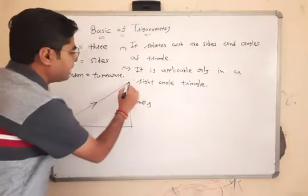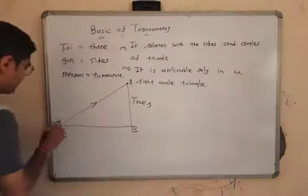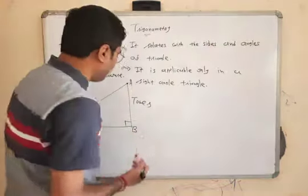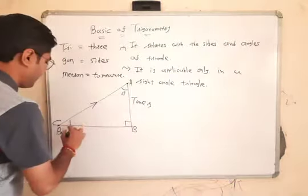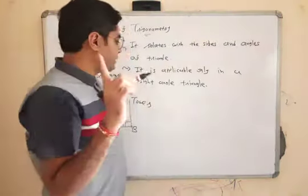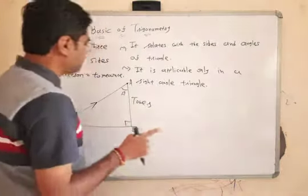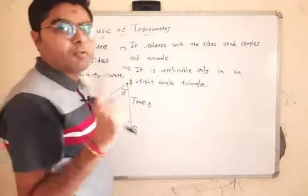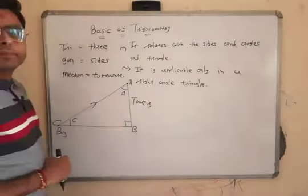Let me name this triangle A, B, C. Here B is a right angle, and angle A and angle C are acute angles. Make sure we make trigonometric ratios for acute angles only.